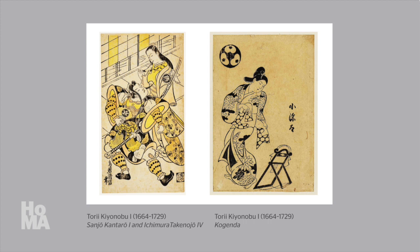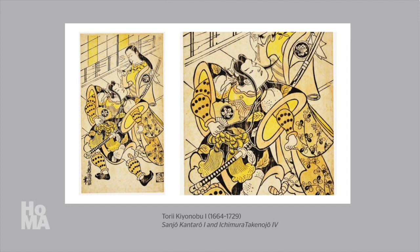Kiyonobu was born in Osaka around 1664. His father was a kabuki actor and a painter, and Kiyonobu himself grew up painting signboards for kabuki performances. When he was in his 20s, the family moved to Edo. There, he assisted with the foundation of the Tori School of Painting. More importantly, he also produced prints that document two facets of Edo's entertainment industry: the kabuki theater and the Yoshiwara brothel district. Many of Kiyonobu's prints focus upon celebrities who achieved fame within Edo's popular culture during the late 17th century.